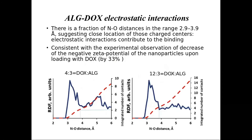To clarify the contribution of electrostatic interactions between doxorubicin and alginate, we extracted from the simulation data the interatomic distances between the charged nitrogen centers in doxorubicin and the negatively charged carboxyl oxygen centers in alginate. We present results for two systems: a 4:3 and a 12:3 doxorubicin-to-alginate ratio. We observe a fraction of distances in the range of 2.9 to 3.9 Å, suggesting close location of the charged centers.